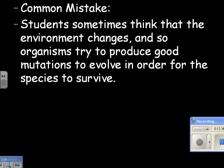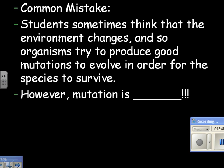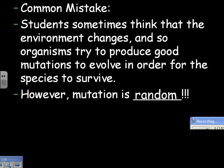Here's a common mistake: students sometimes think the environment changes and so organisms try to produce good mutations to evolve in order for the species to survive. No — they just produce random mutations. In a population, there will be some mutations. If there's a mutation that helps, great. If not, then that individual will die, or the whole population might die if they're in a changing environment.